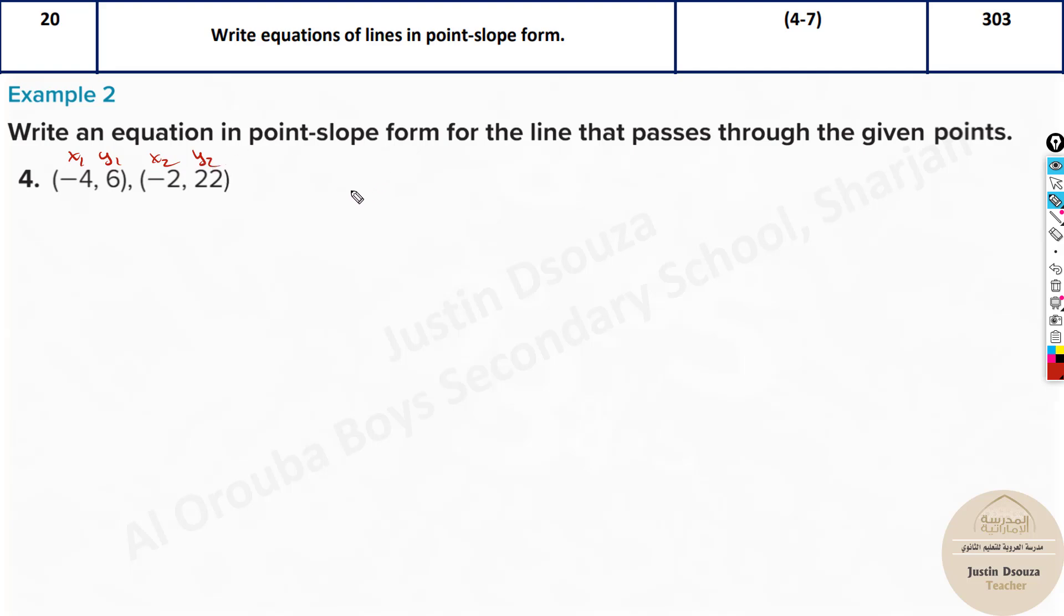Now step one is always finding the slope. m equals y2 minus y1 by x2 minus x1, this is the slope formula. Substituting, y2 is 22 minus y1 is 6 divided by minus 2 minus of minus 4. Let's solve it: 22 minus 6 will be 16 divided by plus 4 minus 2 is 2, answer is 8. This is the slope.